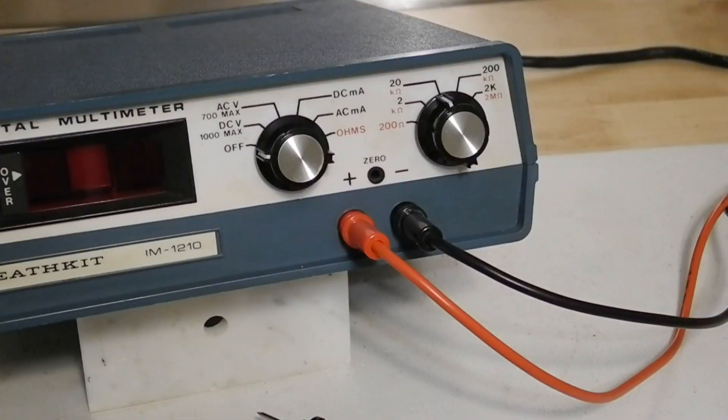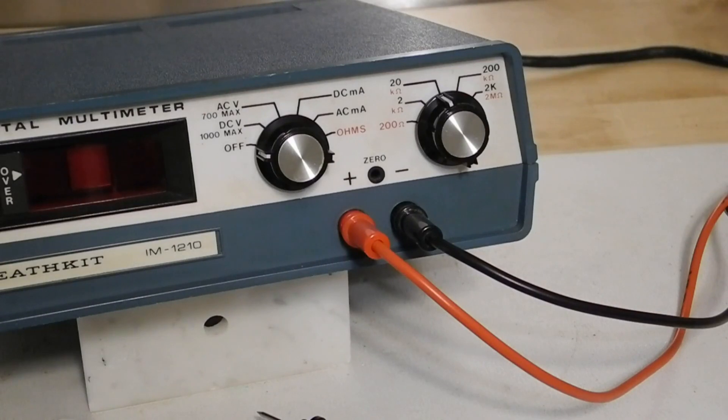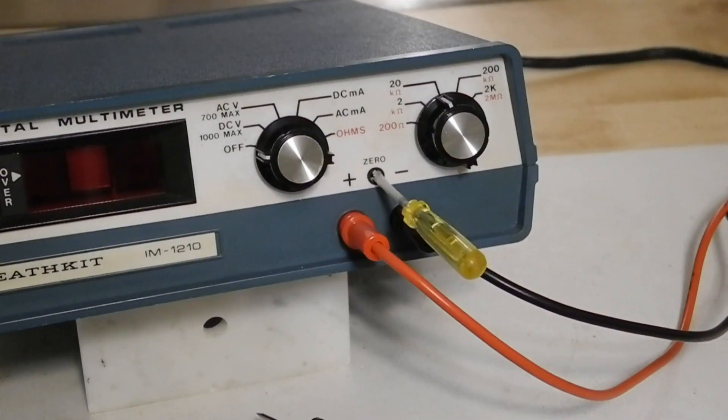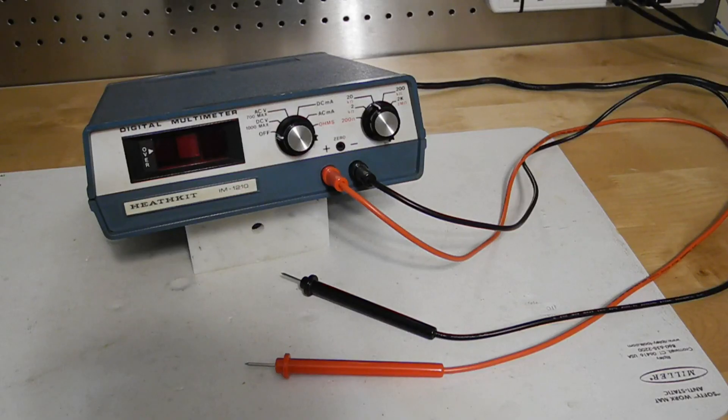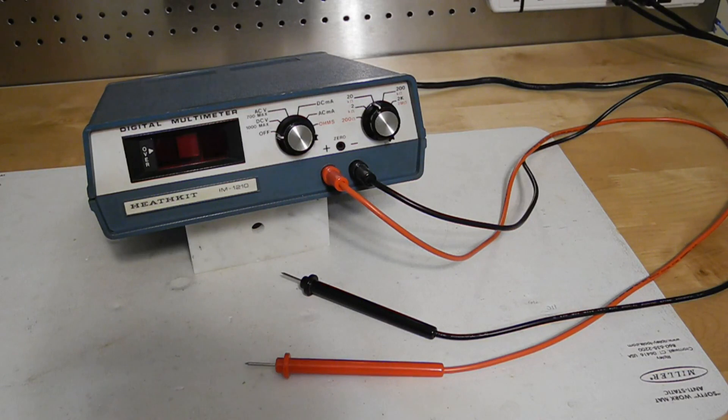On the front are two banana jacks for the inputs, a red plus and a black negative. Modern multimeters now use a recessed type of banana jack that's safer, but these were standard at the time. Above the input jacks is a small hole marked zero. Behind it's a trimmer pot that can be adjusted during calibration so that the meter reads zero with no input voltage. This may need to be adjusted periodically if the instrument's calibration drifts. The kit came with a set of test leads similar to these ones.